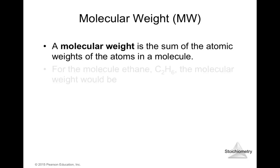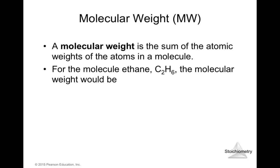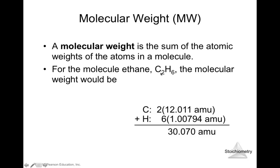The molecular weight is the sum of atomic weights of atoms in a molecule. For ethane, C2H6: two times the atomic mass of carbon plus six times the atomic mass of hydrogen gives a molecular weight of 30.070 atomic mass units. This is the molecular weight for C2H6.